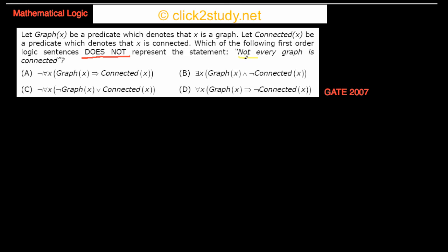I'm going to use G(x) instead of 'graph X' and C(x) instead of 'connected X' to make things easier. This question looks like it uses graph theory, but in fact it only uses mathematical logic — the terms 'graph' and 'connected' are just context for converting an English sentence into logical notation.